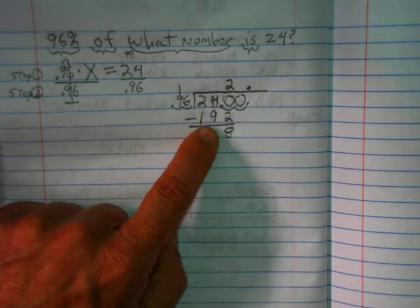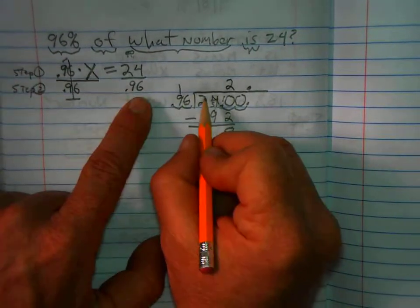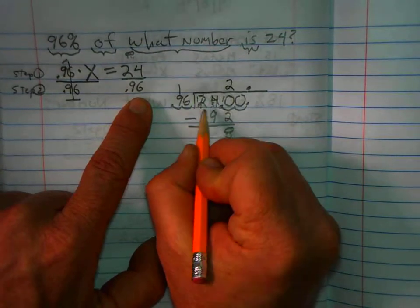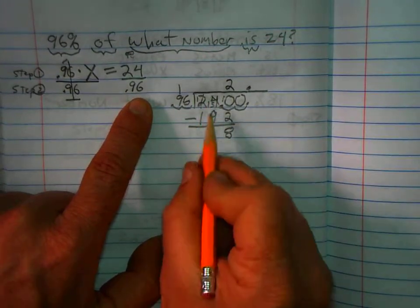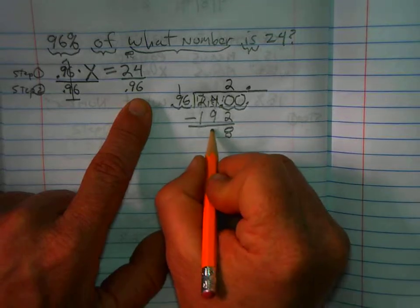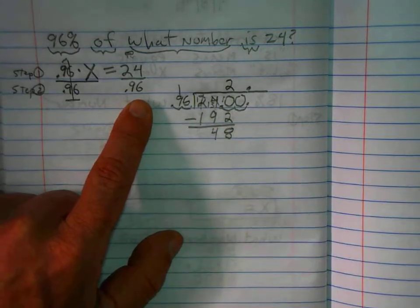I can't subtract nine from three. So I have to borrow from this two. That becomes one. This is thirteen. Thirteen minus nine is four. One minus one is zero. We're good.